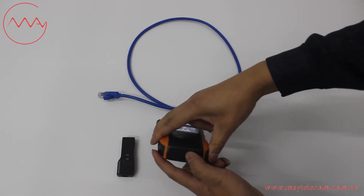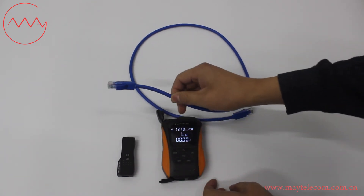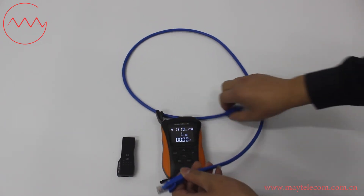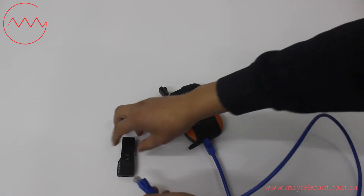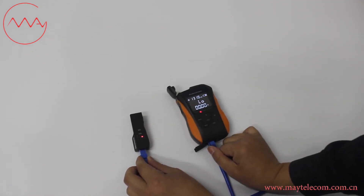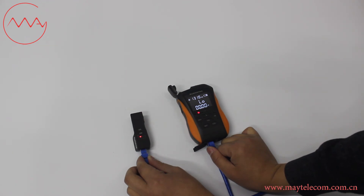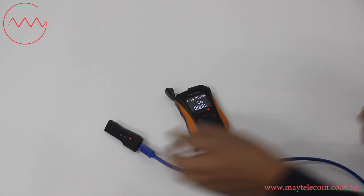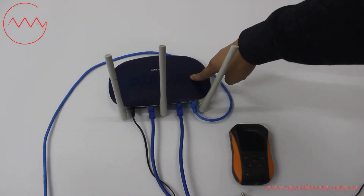On the bottom of the OPM, open the dust cap of the Ethernet port. Connect the RJ45 Ethernet cable to the Ethernet port of the OPM, then connect to the slave module. The light flashes from 1 to 8, indicating the continuity of the RJ45 Ethernet cable is good. This is a router installed with an RJ45 Ethernet cable.